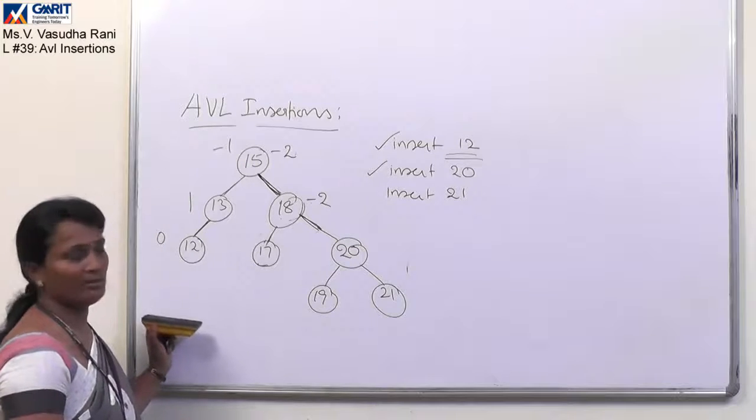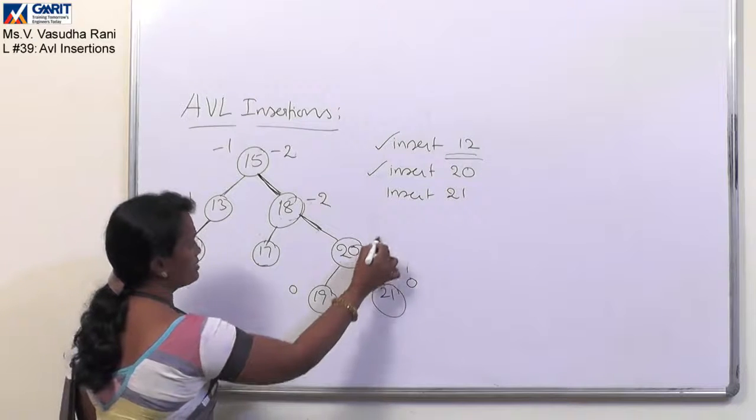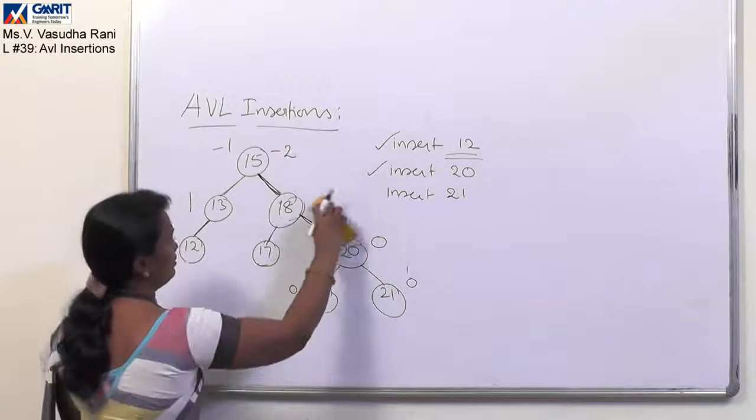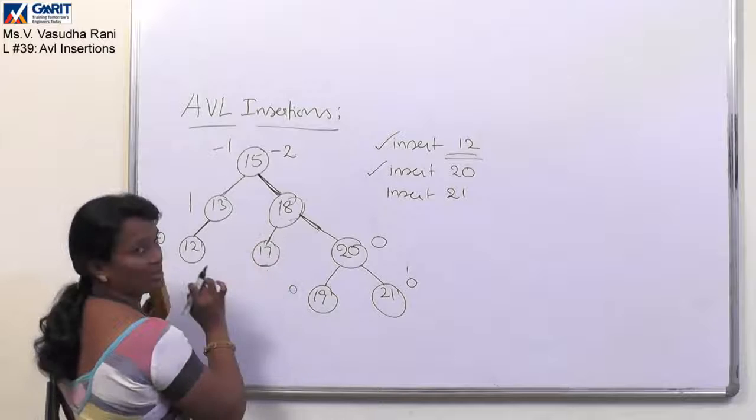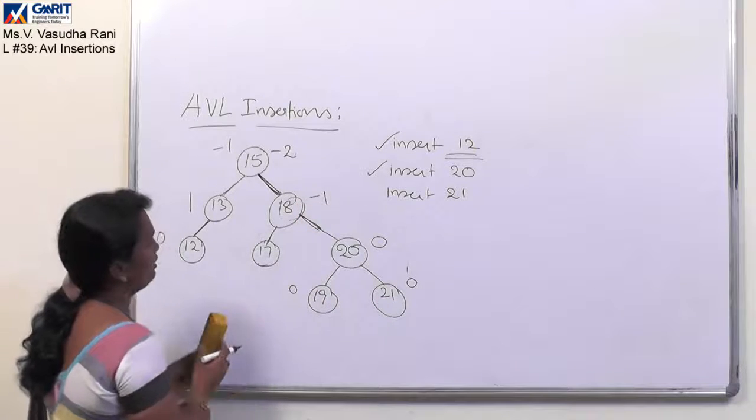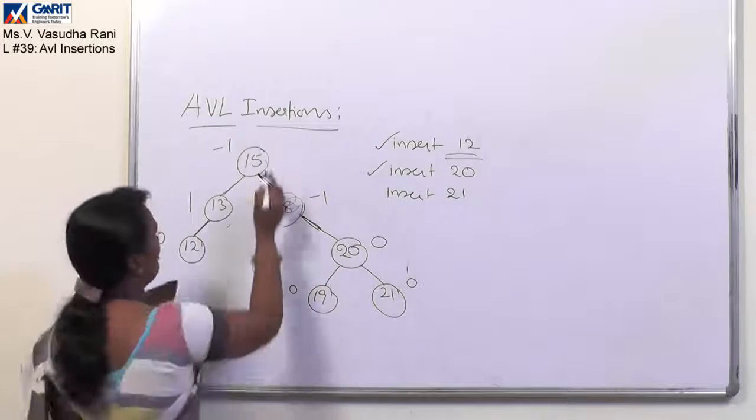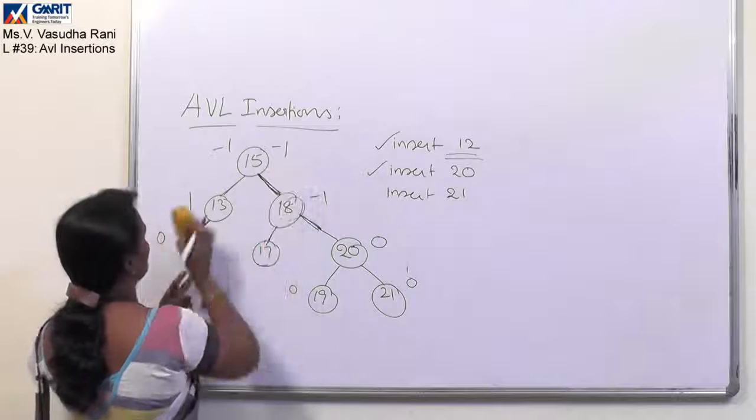So now is it satisfying the AVL property? Yes. Here it is 0, 0. Here it is 0. Here it is left subtree is 1, right subtree is 2, so it is minus 1. And here left subtree is 2, right subtree is 3, that is minus 1.